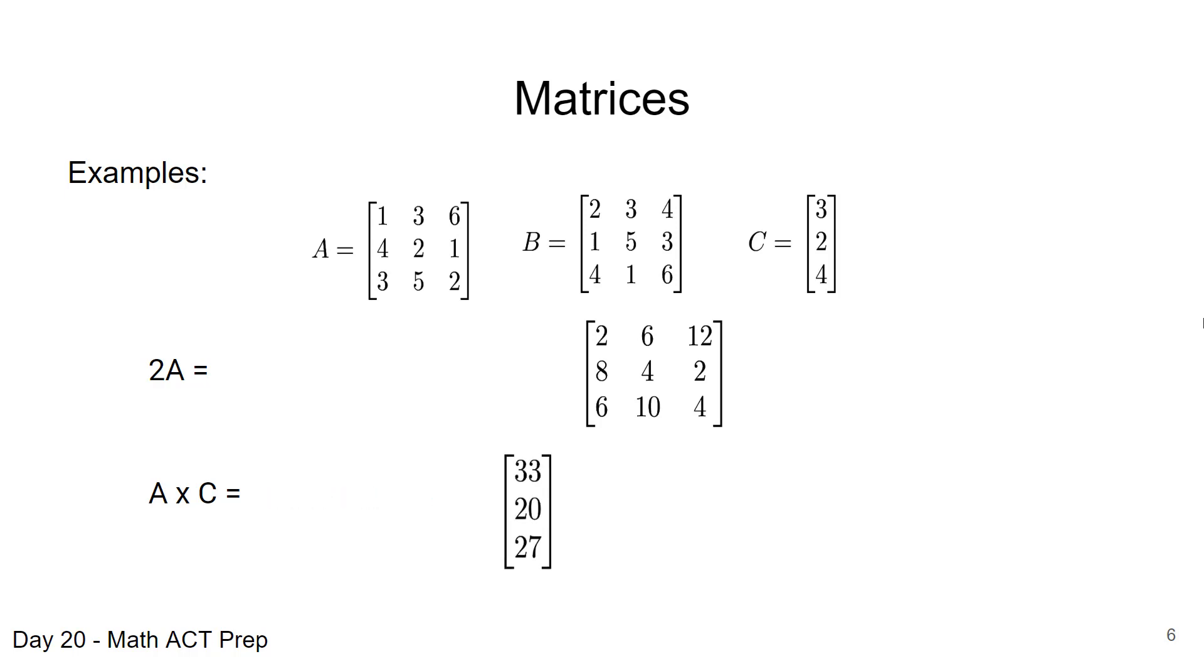When we have multiplication of matrices, that gets a little bit more complicated. When we do the A times C, we can multiply these because when you do multiplication, you multiply the row of the first matrix, so the 1, 3, 6, we're going to multiply those components and add them up with the column 3, 2, 4 of C. Row 1 times column 1 of C. We'll multiply 1 times 3 plus 3 times 2 plus 6 times 4. And when we add those up, it should give us 33. And then we continue that with row 2 and row 3. And that will give us the other components.